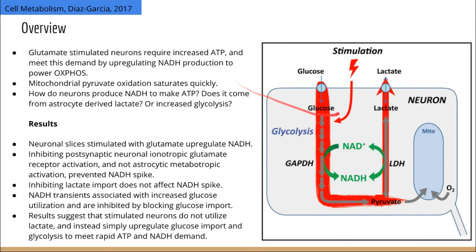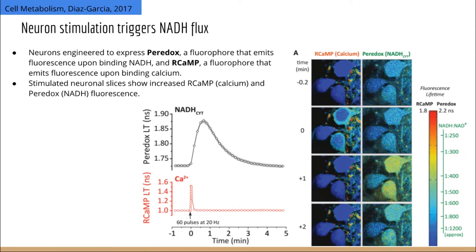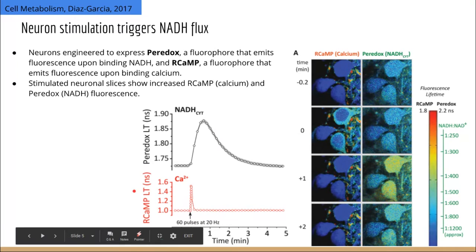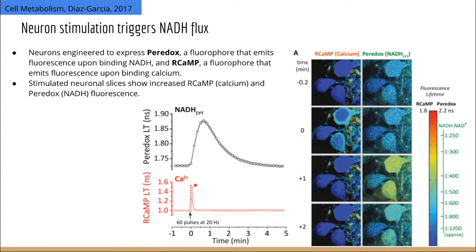Now let's get into the specifics. The first challenge is how do you actually see NADH and calcium flux in live animals? To make NADH and calcium visible through a microscope, they genetically engineered mice to express a biosensor called Paradox — a fluorophore that emits fluorescence upon binding NADH. They also expressed another fluorophore called RCAMP, which emits fluorescence upon binding calcium. When NADH or calcium concentrations rise, these endogenously expressed proteins bind them and emit fluorescence detectable with a microscope.